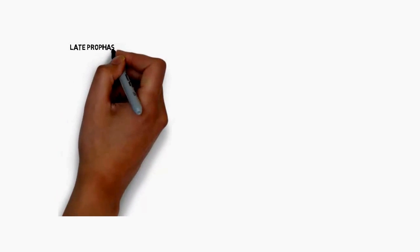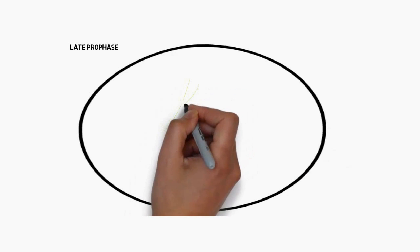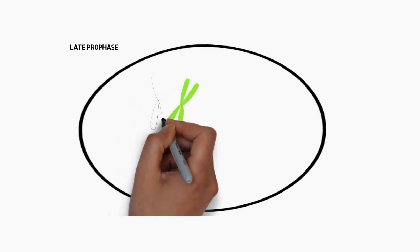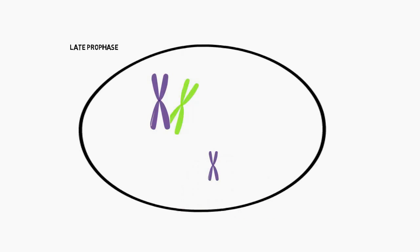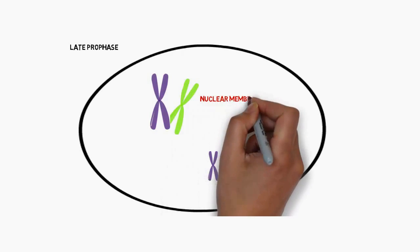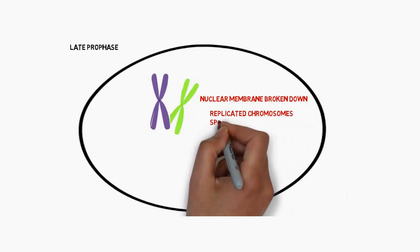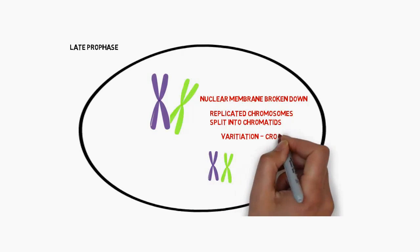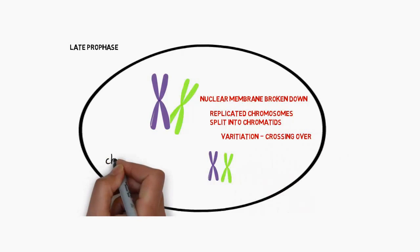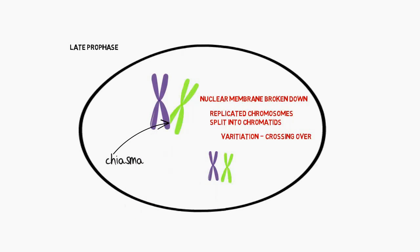In late prophase, we can see that the nuclear membrane has been broken down. Our chromosomes now have the characteristic X shape — the two parts of the chromosome joined together in the middle by a centromere. The chromosomes are touching each other and crossing over, which exchanges genetic material between the paternal and maternal chromosomes. Replicated chromosomes split into chromatids, so we have sister chromatids making up those individual chromosomes. The chiasmata are the locations where crossing over actually occurs, and variation is introduced through this crossing over.